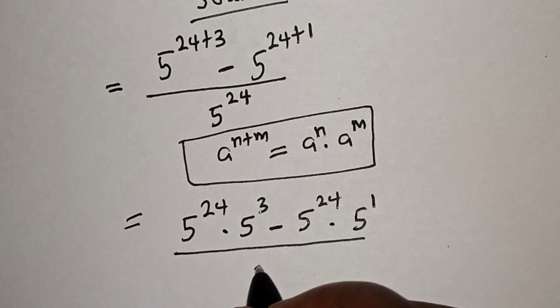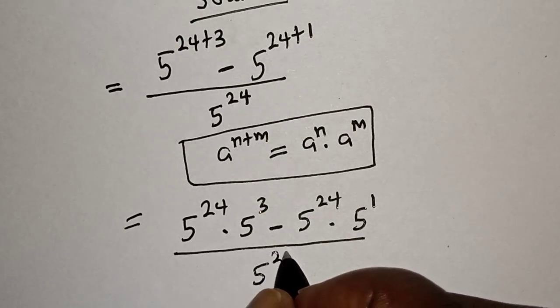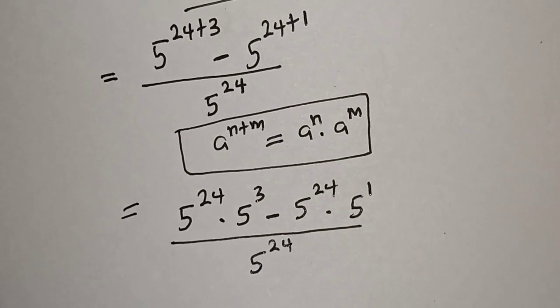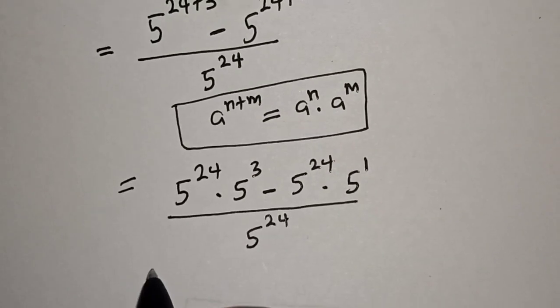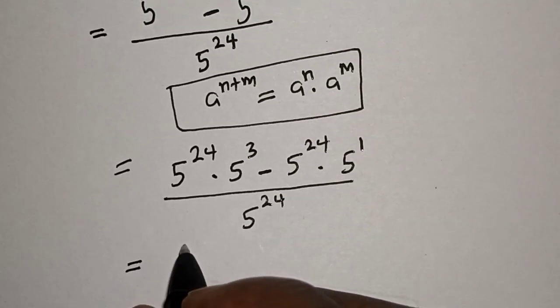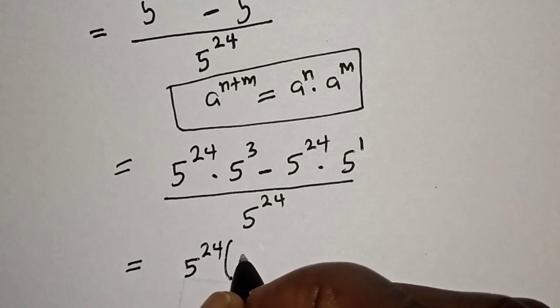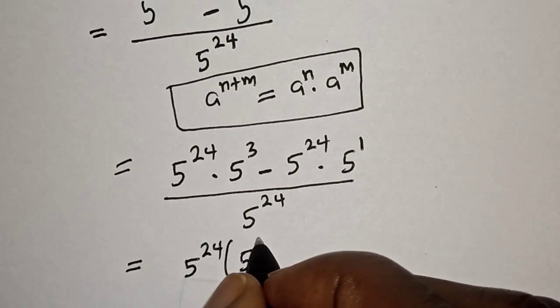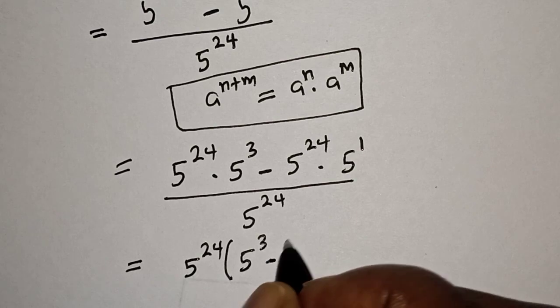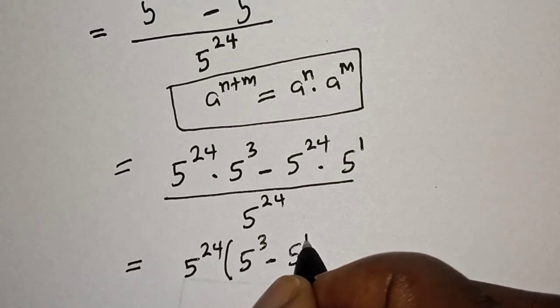over 5 raised to power 24. This equals 5 raised to power 24 multiplied by 5 raised to power 3 minus 5 raised to power 1